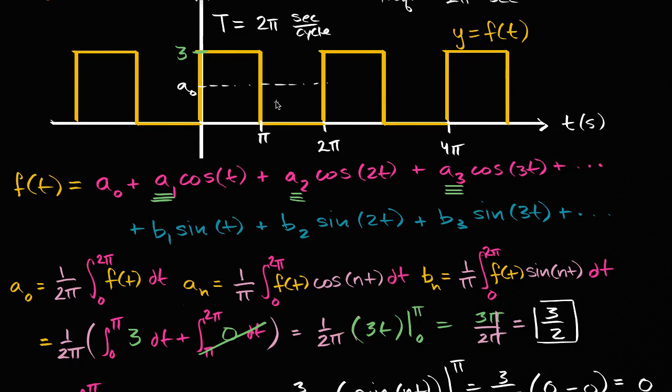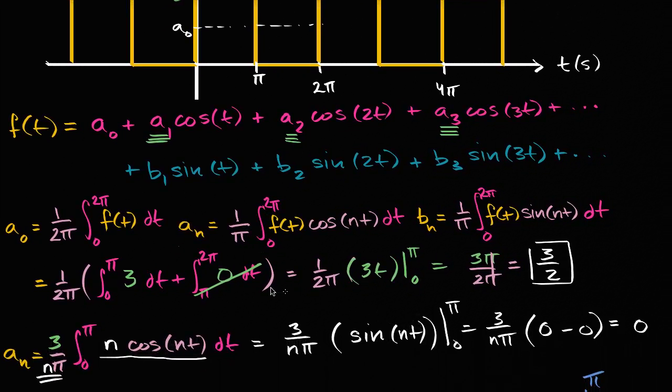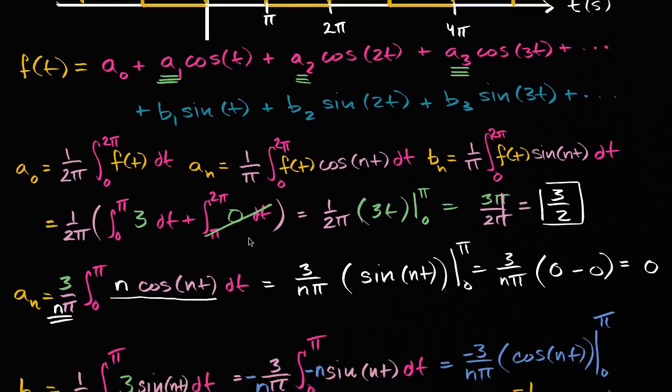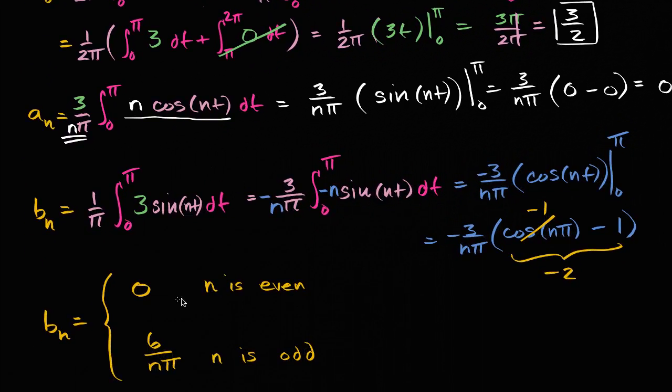And evaluating it for this particular square wave, we were able to get that a sub zero is going to be three halves, that a sub n is going to be equal to zero for any n other than zero, and that b sub n is going to be equal to zero if n is even and six over n pi if n is odd.